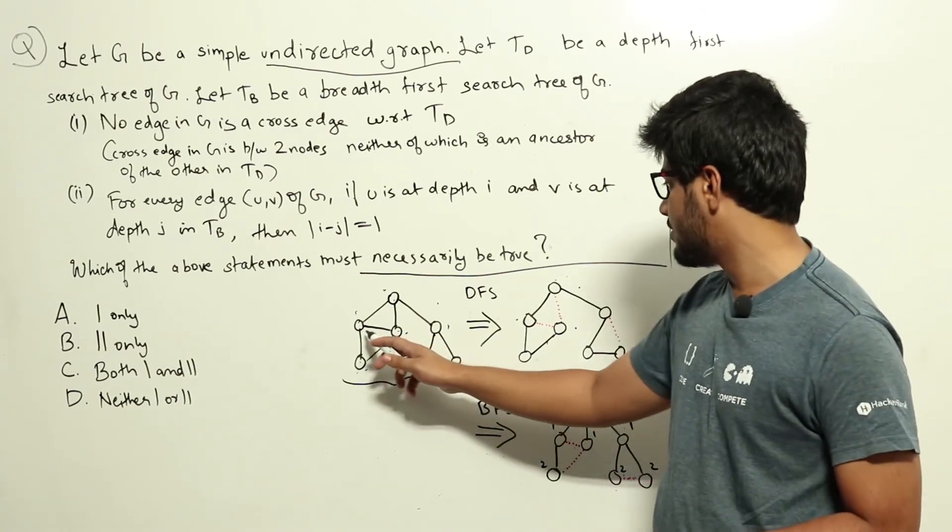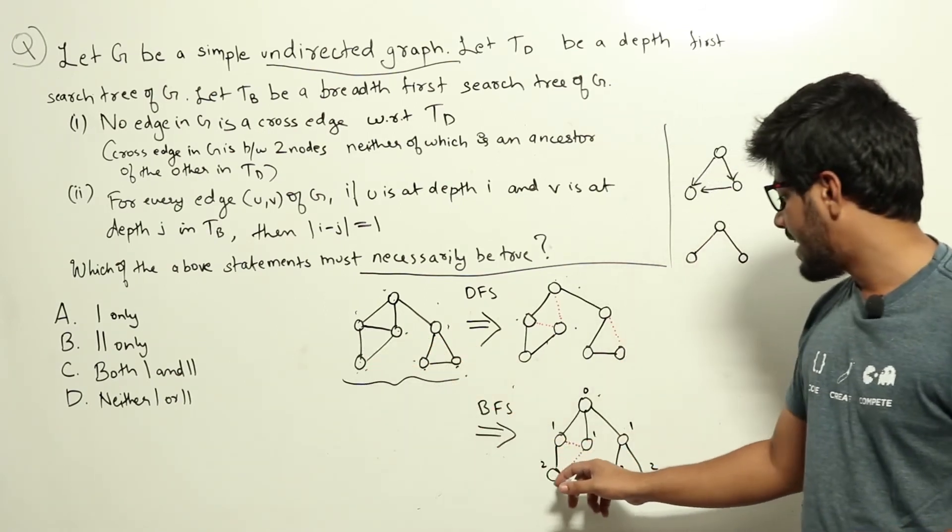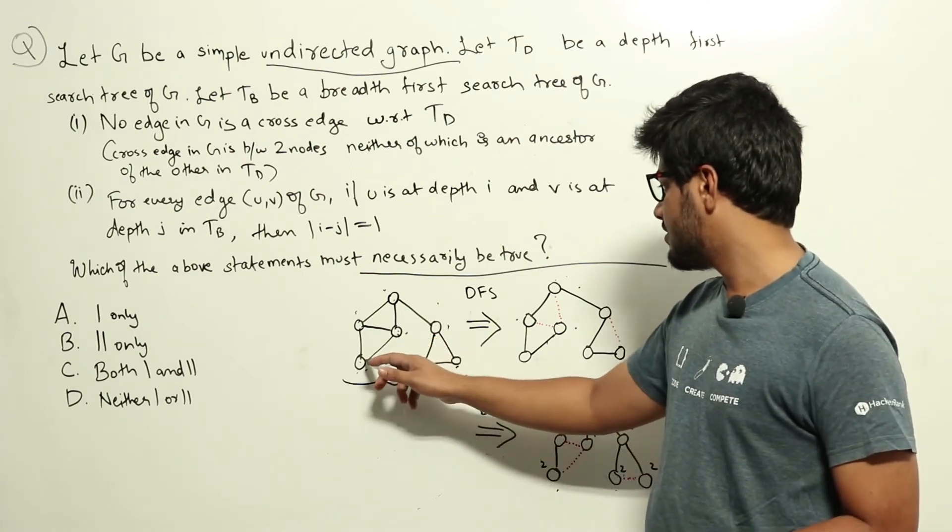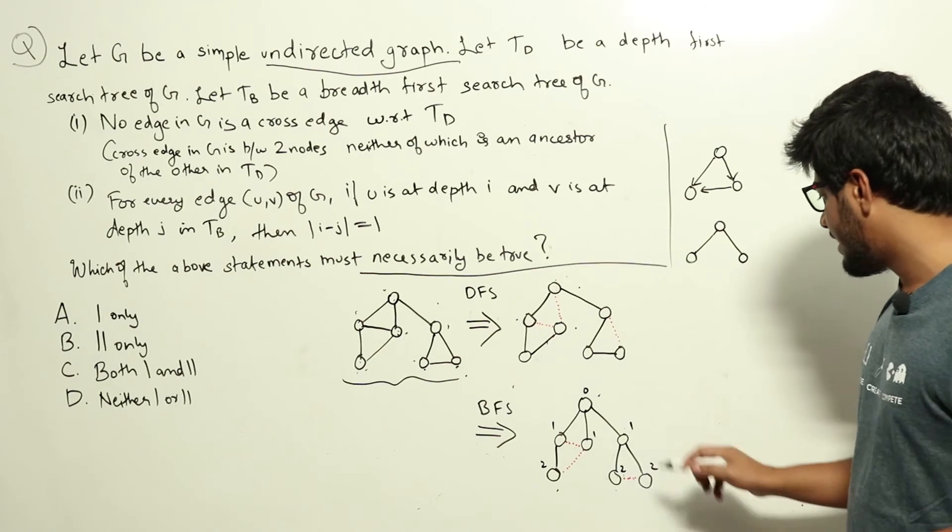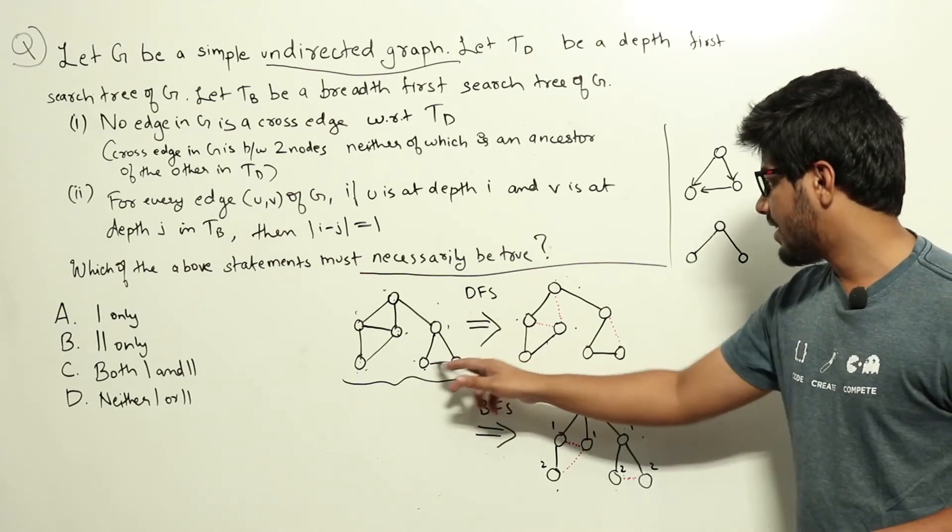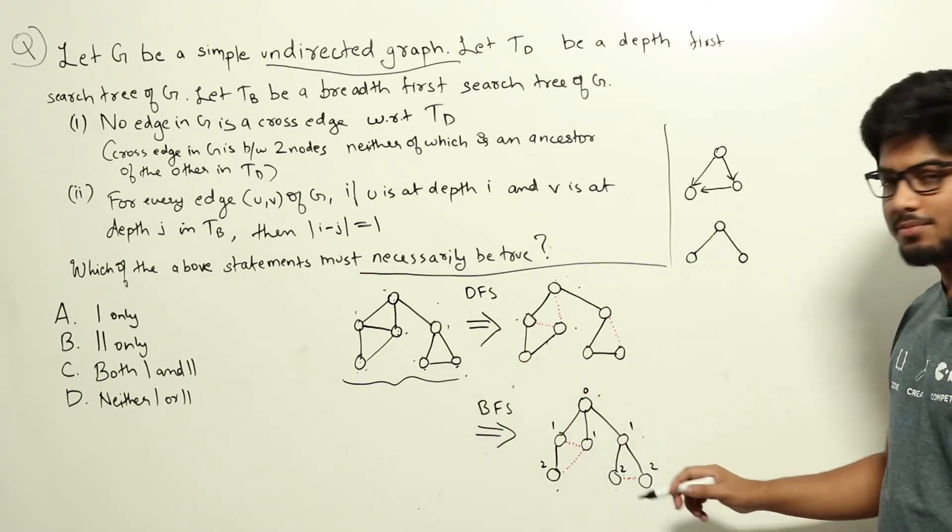Then we look at depth 2 nodes. For this one there is this. We add that here. For this node there is only one, this node, but we have already added that. There is nothing more to add. And coming to this node we have these two as children, so that is also at depth 2.